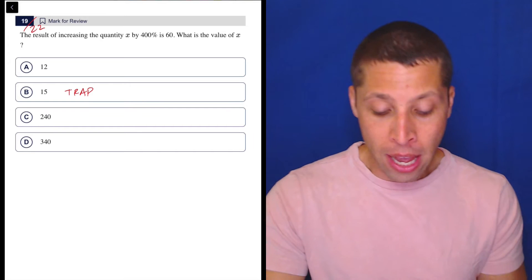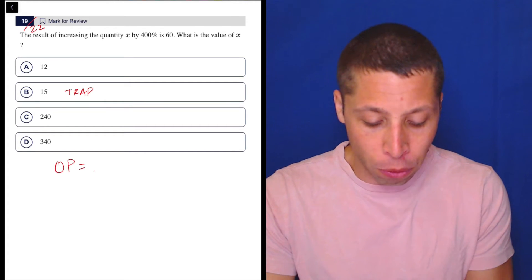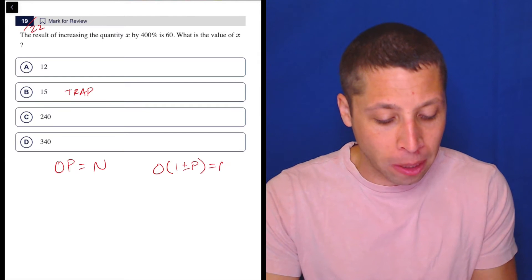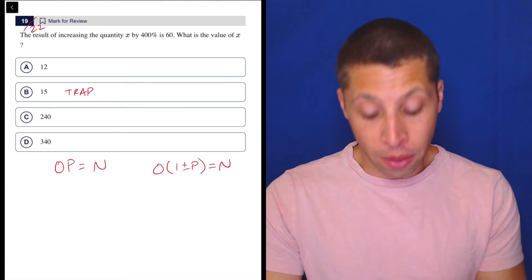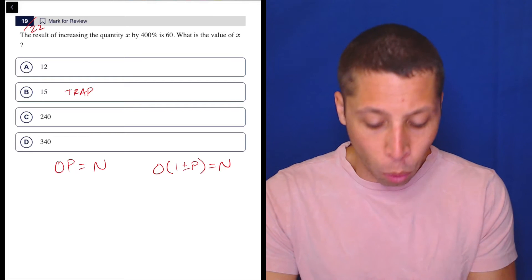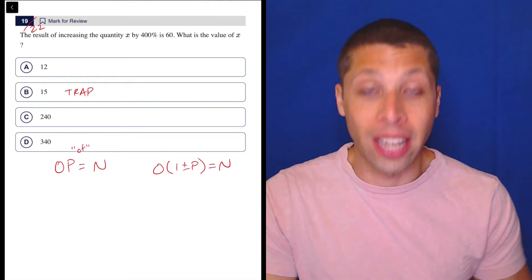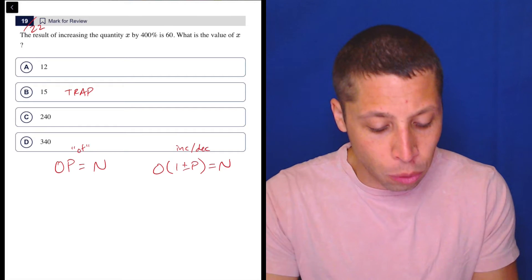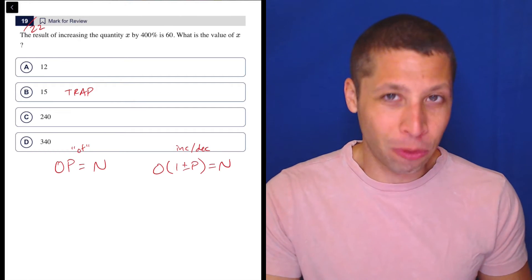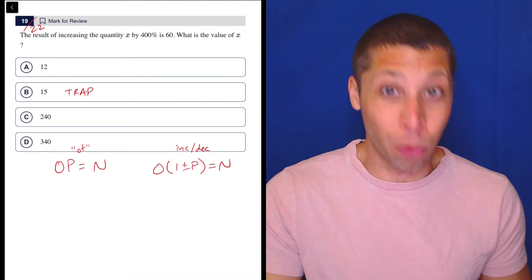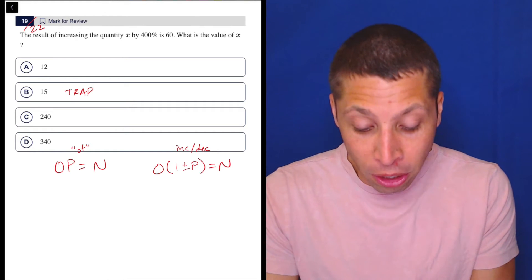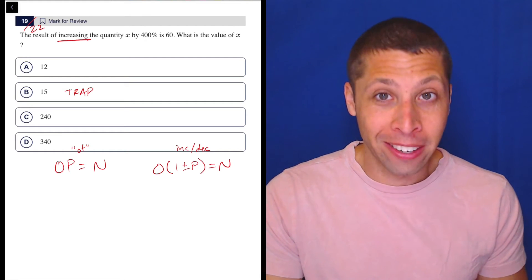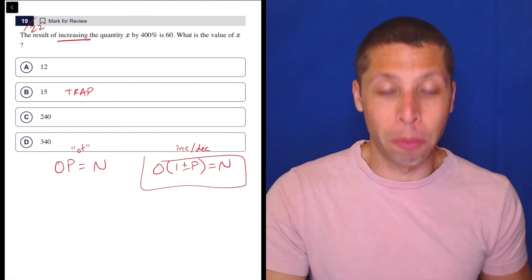So we have a formula. We use either one of the open formulas. There are two versions of this depending on how we're talking about the percentages. The first one, the simple open formula, is going to work when we have situations where it's like a percent of something. And this other one is going to work when we have increases or decreases. Well, it's not hard to decide which formula to use. The question almost always makes it really clear. The result of increasing the quantity X by 400%, so you're increasing by a percentage, we're using this formula.